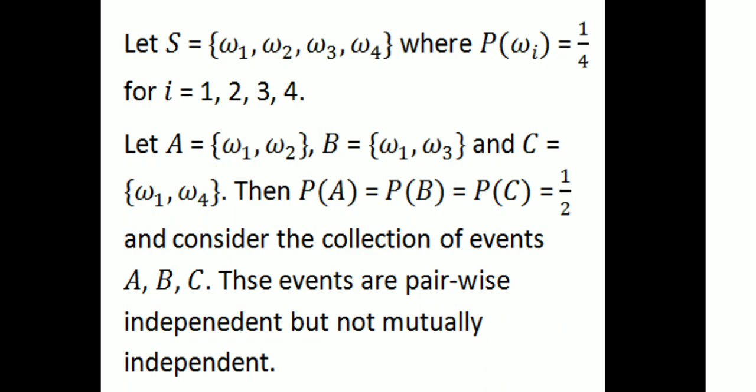Let A equal the set containing W1 and W2, B equal the set containing W1 and W3, and C equal the set containing W1 and W4. Then probability of A, probability of B, and probability of C each equal 1 by 2. Consider the collection of events A, B, and C. These events are pairwise independent but not mutually independent.